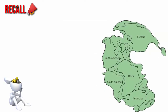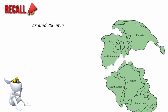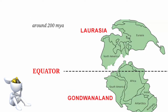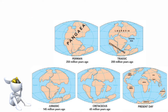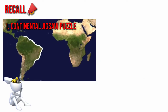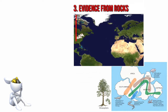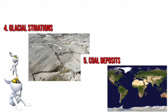Previously, you learned about continental drift theory, which suggests that around 200 million years ago, a supercontinent called Pangea broke down into smaller supercontinents named Laurasia and Gondwanaland. These supercontinents broke into the continents we have in the present time. This theory was supported by the following evidences: the continental jigsaw puzzle, evidence from fossils, evidence from rocks, glacial striation, and coal deposits.